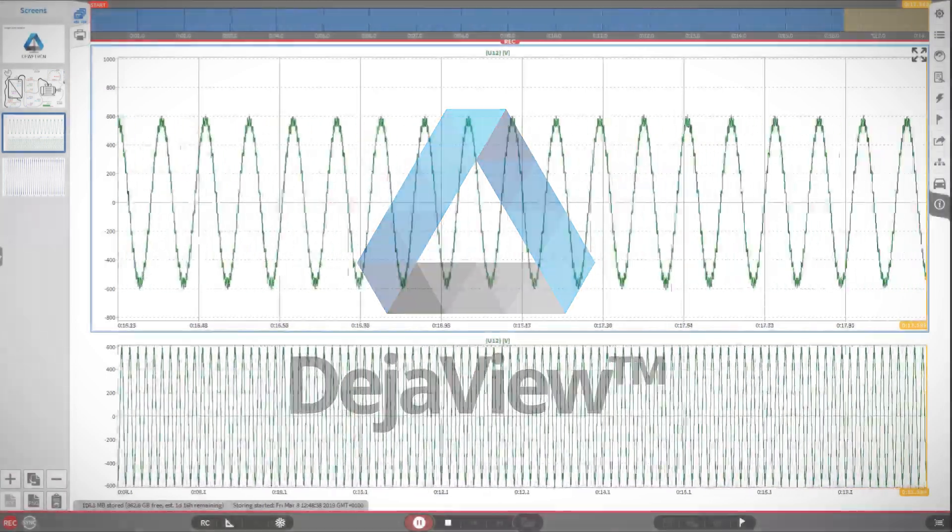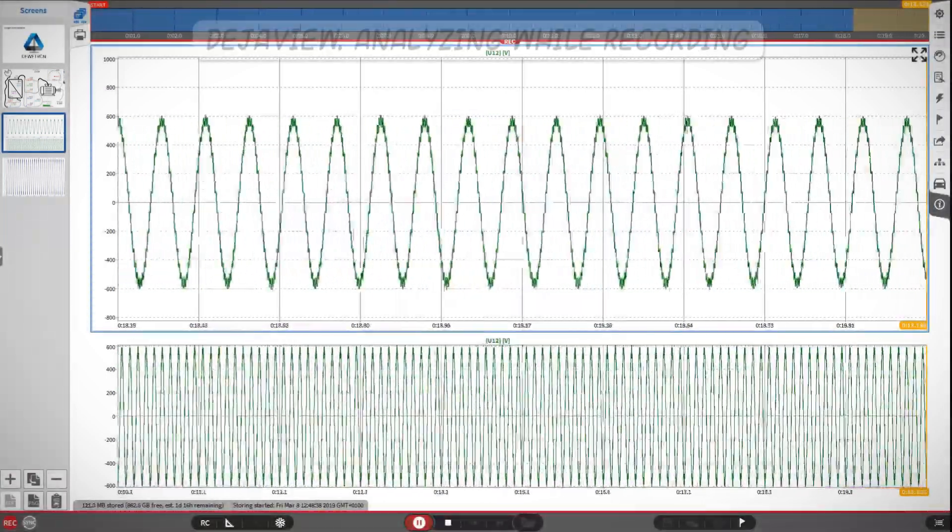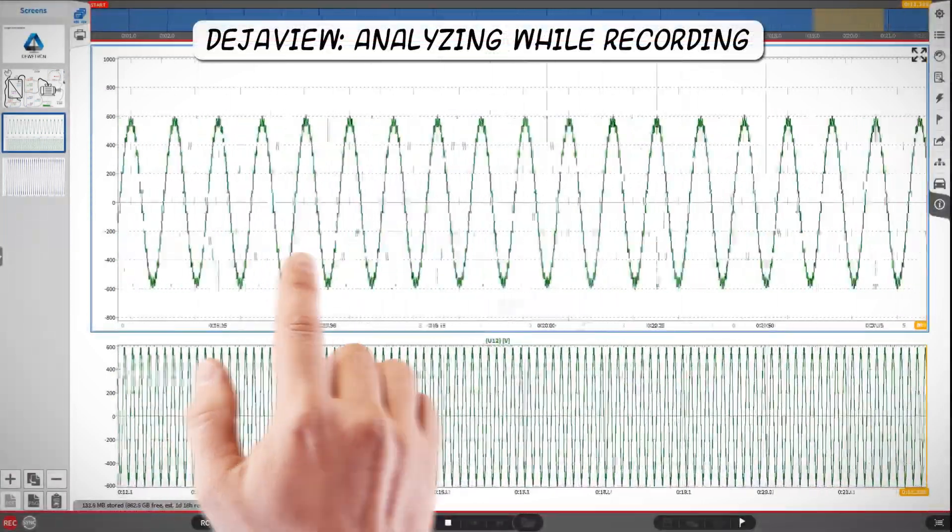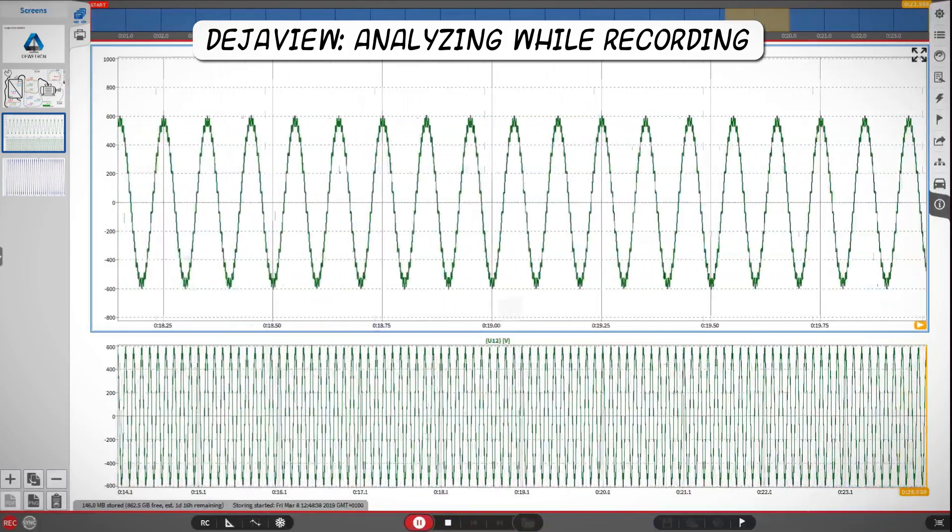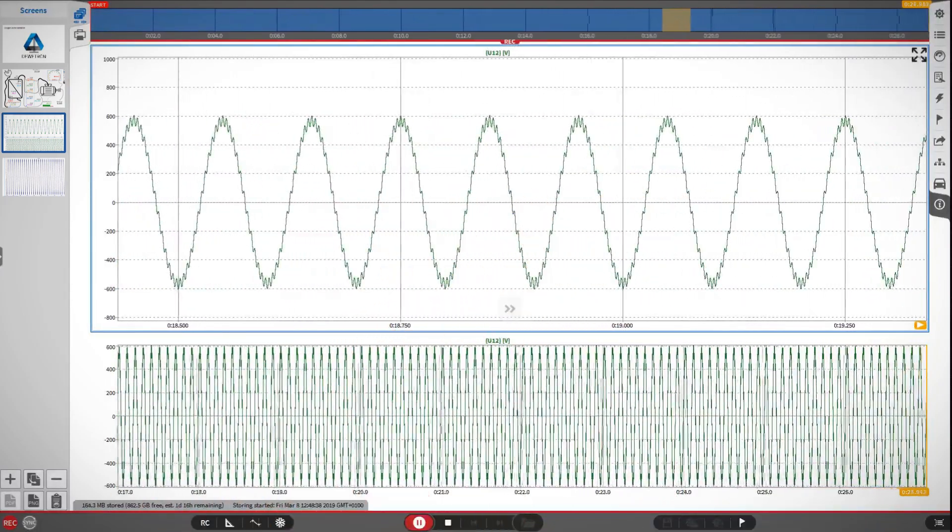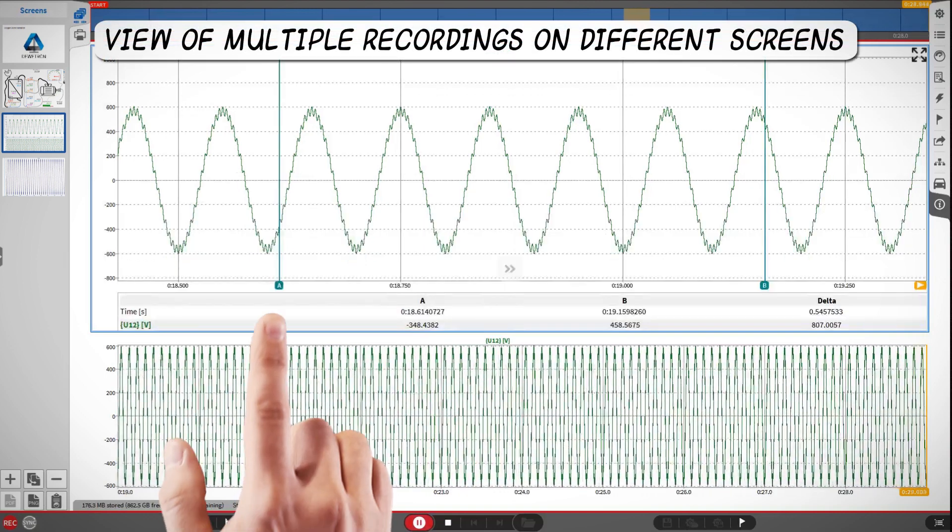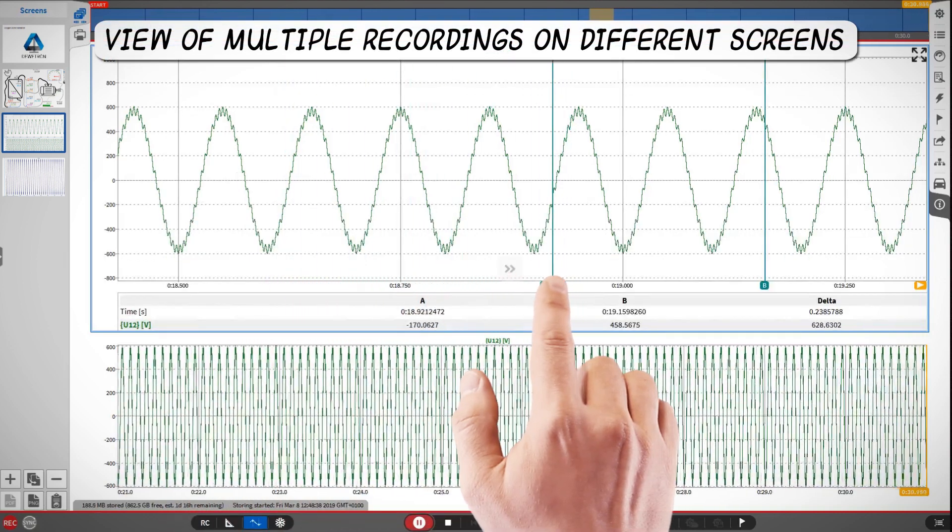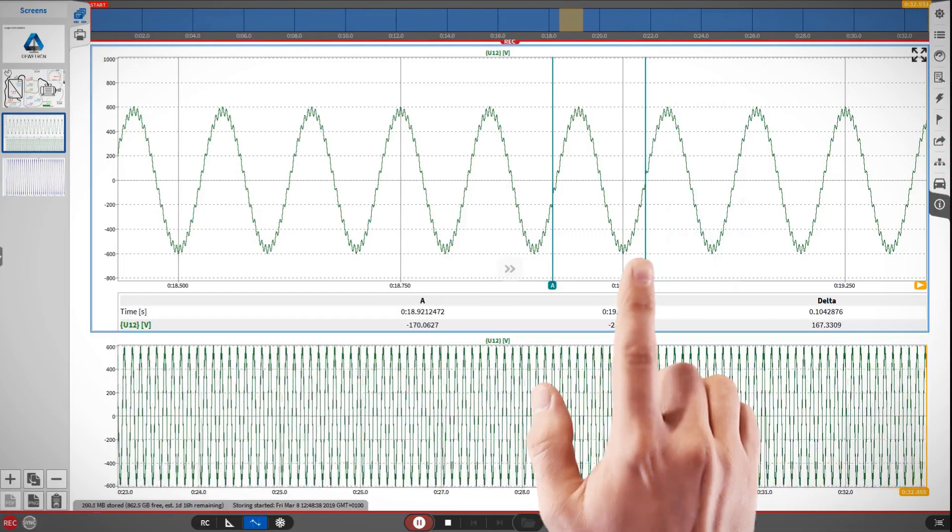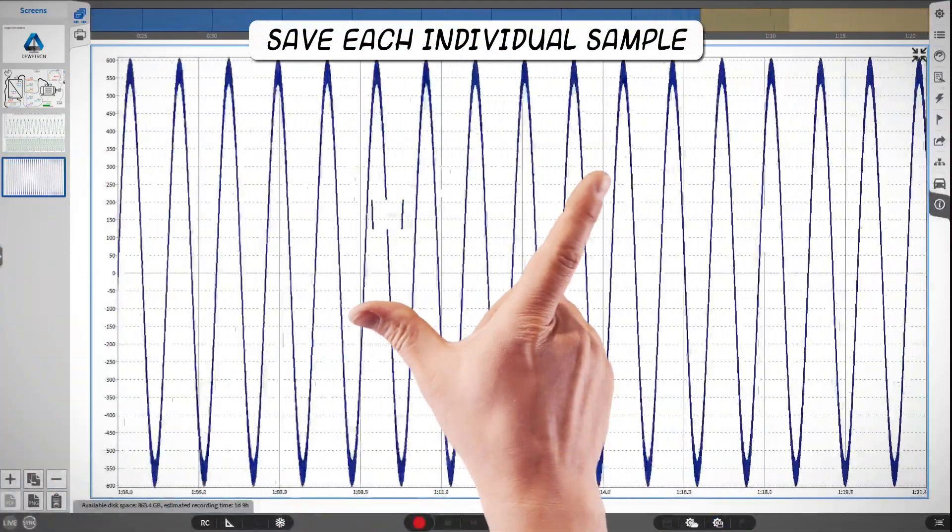What is Deja Vu? David thinks he has Deja Vu. Deja Vu is a feature that allows me to see and analyze all the data of the past during storage. Cool for long-term recordings and the data can be seen in real time on another recorder. Every single sample is saved.